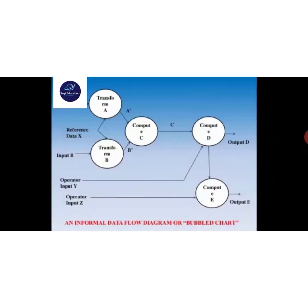The informal data flow diagram shown is a bubble chart containing different circles: circle 1, circle 2, circle 3, circle 4, circle 5, circle A, circle B, transform. Input from circle A and circle B is combined to compute C and produce output D. An intermediate process takes input Y mingled to D, then combines and processes to produce output D. Another output computes E, which combines with input Z to produce output E.